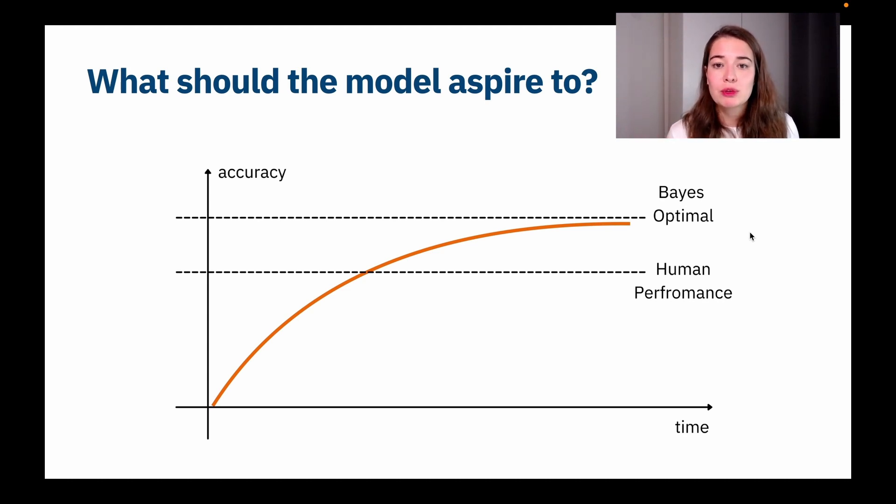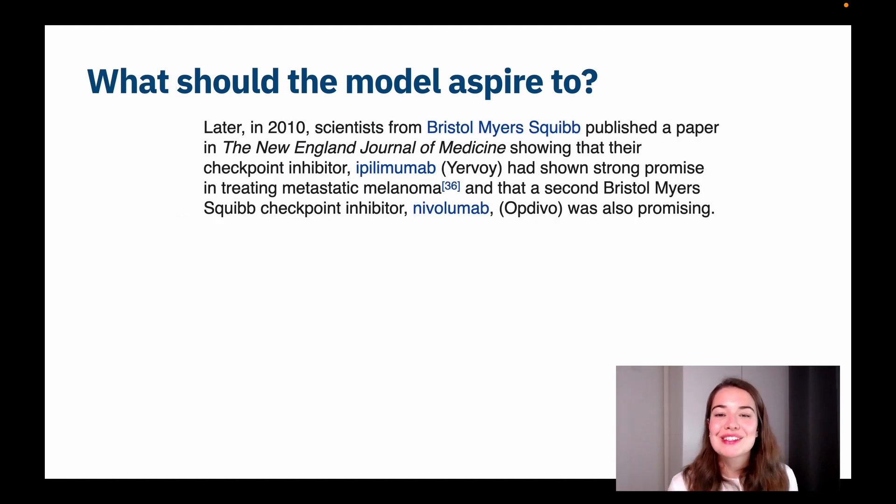How do we decide what human performance is though? Okay, so let's look at an example. Let's say we have a data set that has long medical sentences and we are trying to find how many drug names are mentioned in each sentence.